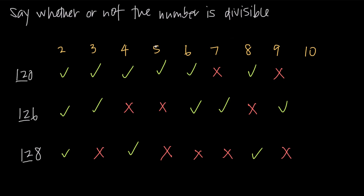Divisibility by 10 is really similar to the rule for 5 and should be an easy one. If the number ends in 0, then it's divisible by 10. So 120, because its last digit is 0, is divisible by 10. But 126 ends in 6 and 128 ends in 8, so those numbers are not divisible by 10. These are just some of the divisibility rules — there are many more, but hopefully these will help you be quicker when figuring out whether a large number is divisible by the smaller numbers 2 through 10.